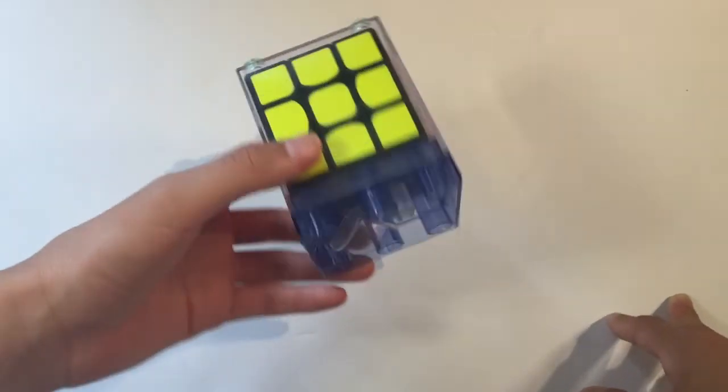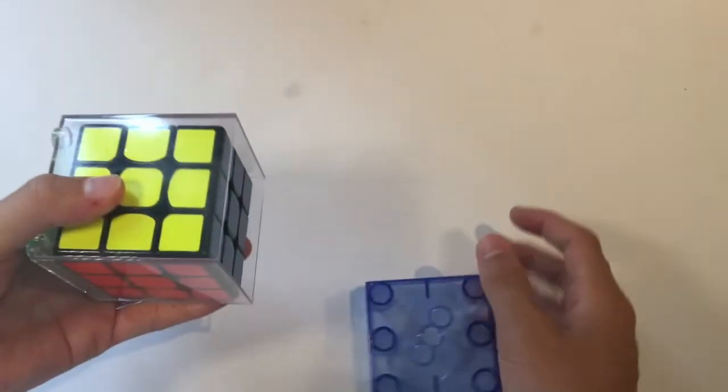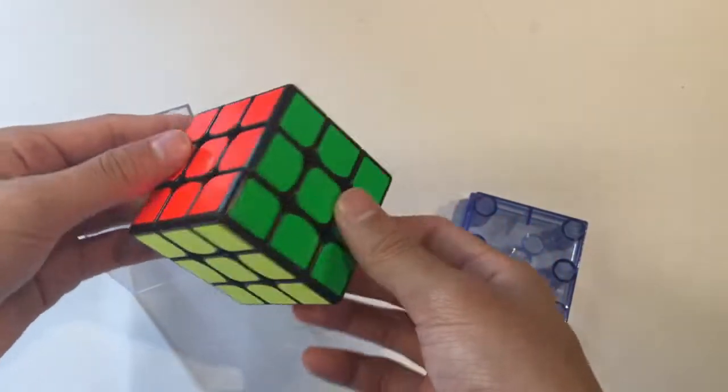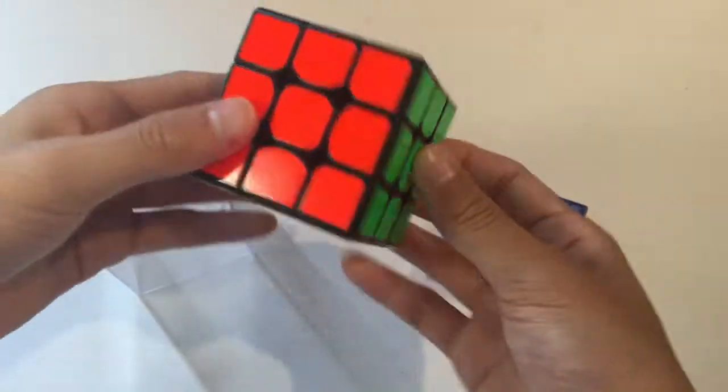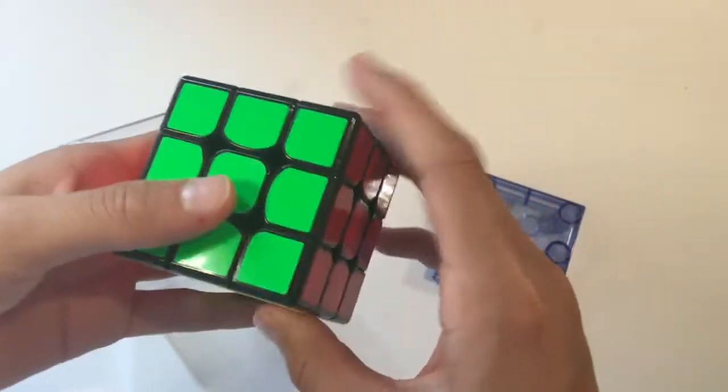Alright, so here is the cube. It comes in this box, which I have seen before. Let's just open it up. Alright, and here is the cube. The first thing I notice is that it is pretty small, not like your normal 3x3. So yeah, I actually have just a regular Moyu Yuxiao from a while back, but let's just try this out right now.